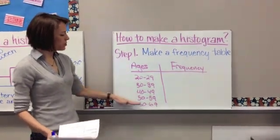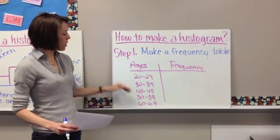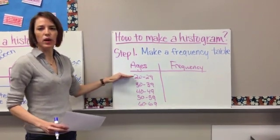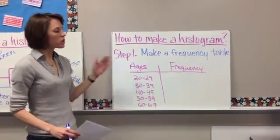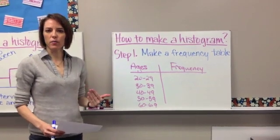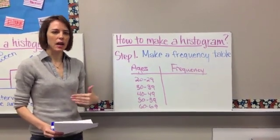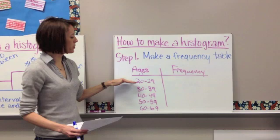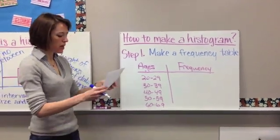So remember, our range was from 22 to 65, so obviously we've got a little bit of leeway here, but that's okay. So what you're going to do is you're going to go through and you're going to count all your numbers and your data to see how many times a number from 20 to 29 shows up. So for 20 to 29, you should get 4.